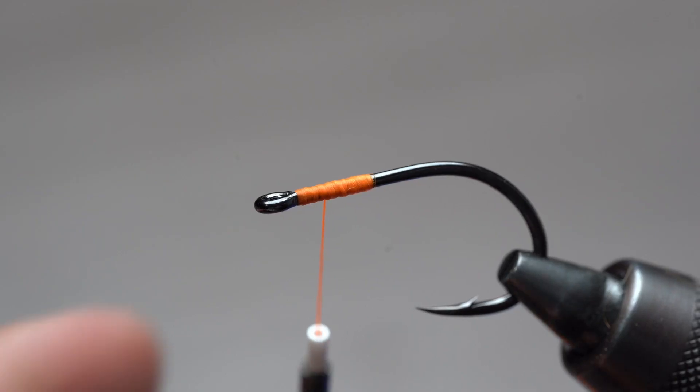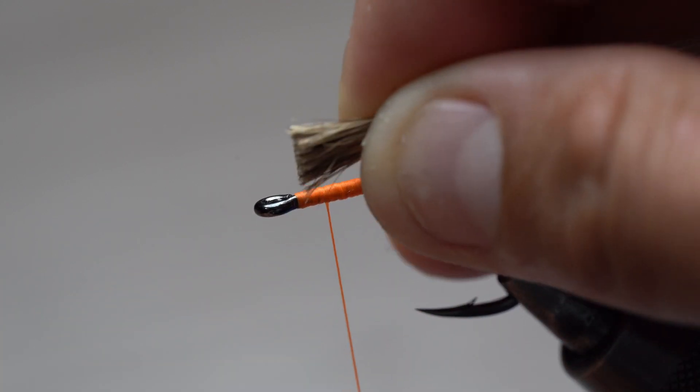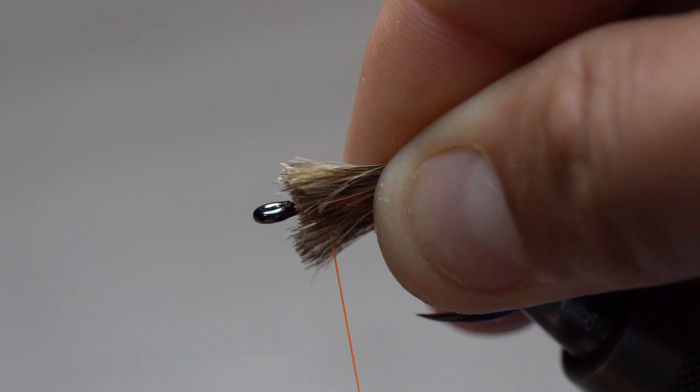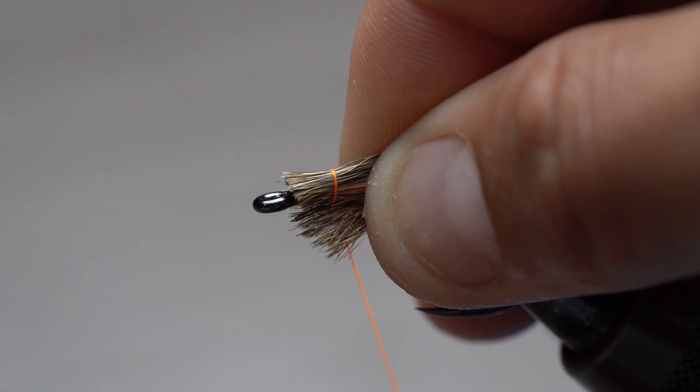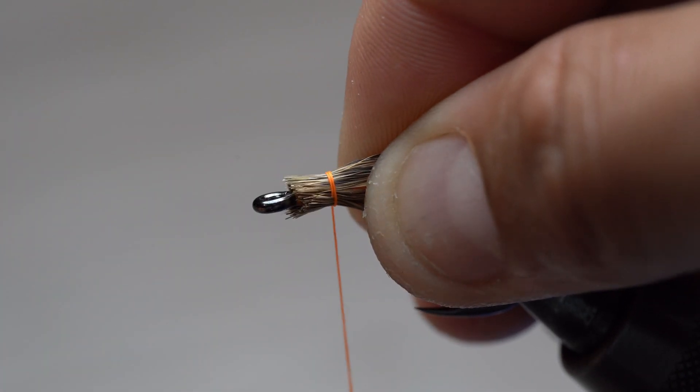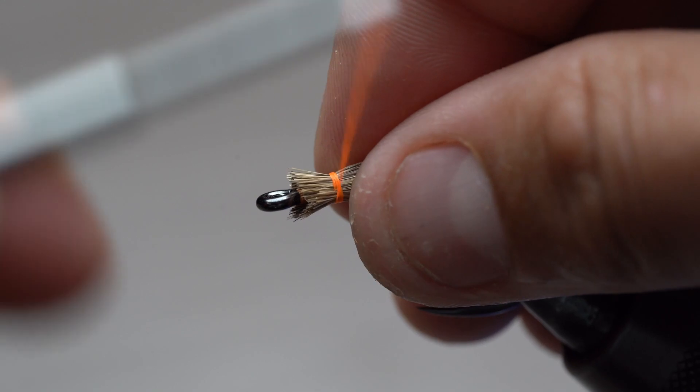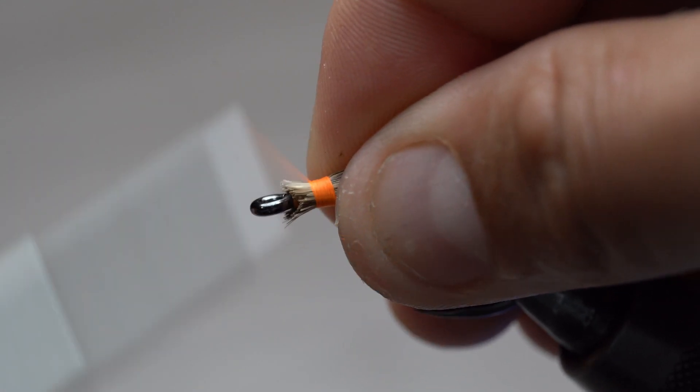When it comes to capturing wraps, it's the same principle. Spin your thread, place the material fully around the hook shank, take one and a half loose wraps to capture all the material. Then you can cinch down with tight wraps after that.